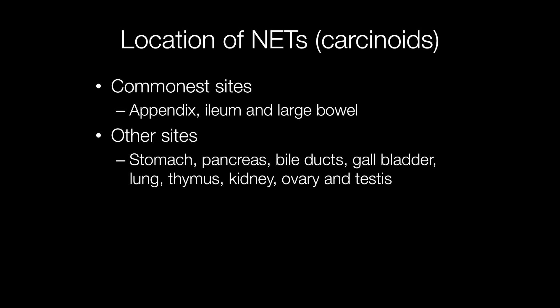The most frequent location of carcinoid or neuroendocrine tumours is the gastrointestinal tract, particularly the ileum. Another important site where carcinoid tumours are seen is the lung, where they are categorised as typical or atypical carcinoids.